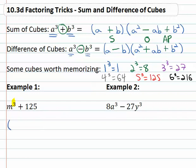The cubes formula says, well what are the cube roots? What to the third power is m³? Well, m to the third power is m³, and what cubed is 125? That's one of them I said you should have memorized, 5³ is 125.